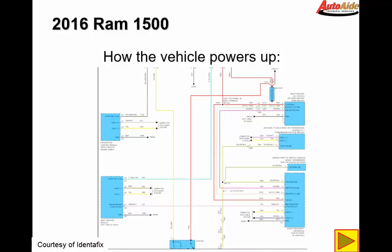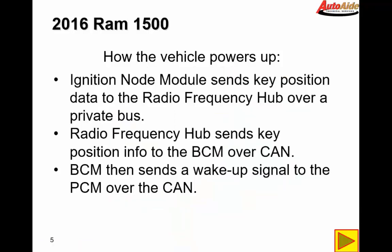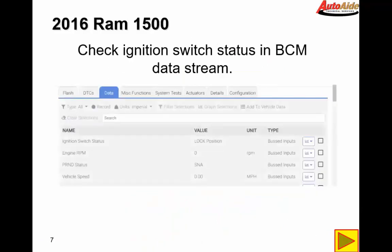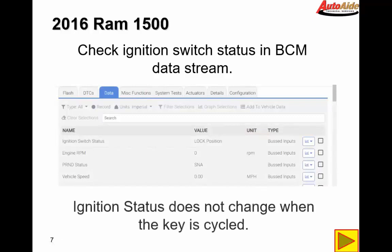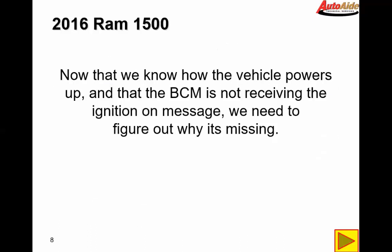So now what we're going to do is check and make sure that the BCM is, in fact, getting the key-on command. As we are cycling the key on and off, the ignition status does not change when the key is cycled. So now that we know how the vehicle powers up and that the BCM is not receiving the ignition message, we need to figure out why it's missing.